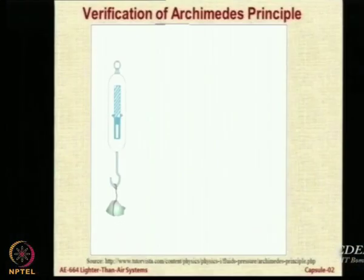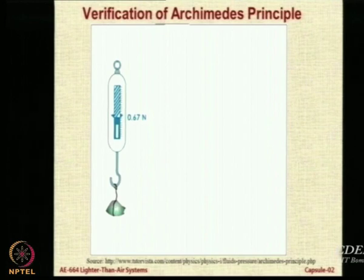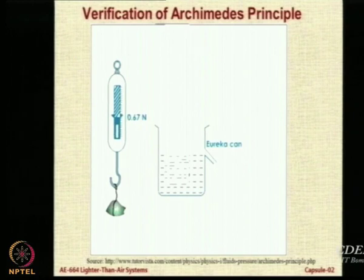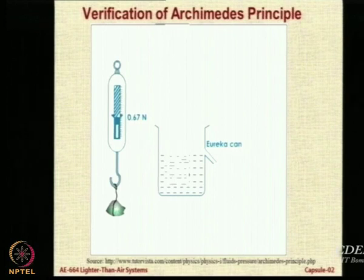Let us verify Archimedes' principle through a small school experiment. You take a spring balance and load a small object such as a stone — the reading is 0.67 Newtons, meaning the weight of the stone is 0.67 Newtons. Then you take a beaker filled with water so the fluid level is just below the spill point. Such a can is called a Eureka can, probably to commemorate Archimedes. The moment the stone is submerged, all displaced fluid will come out of the nozzle.